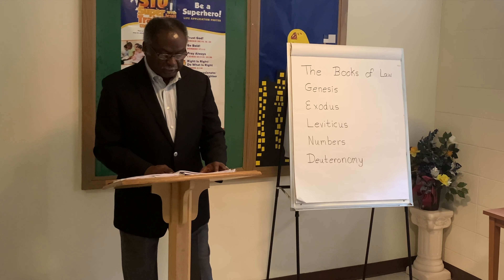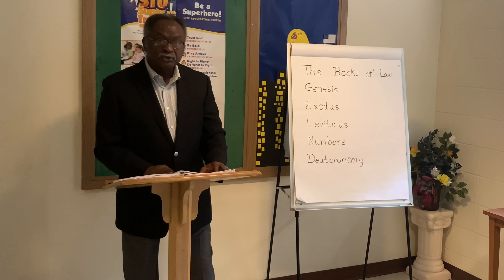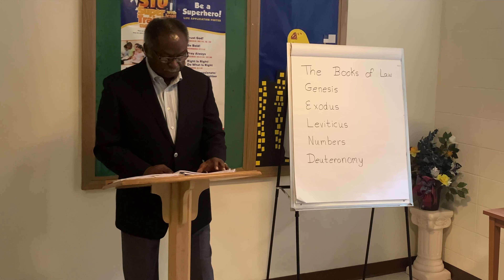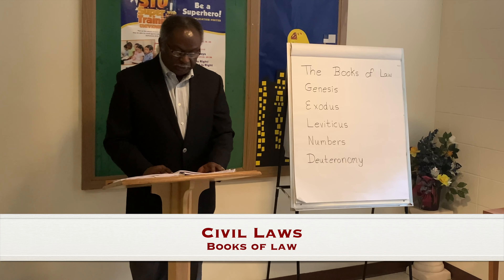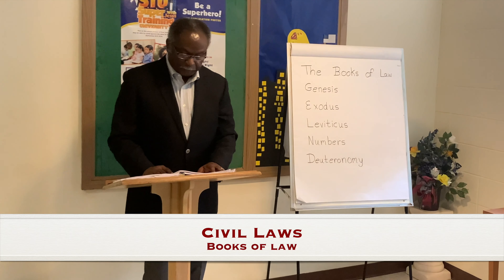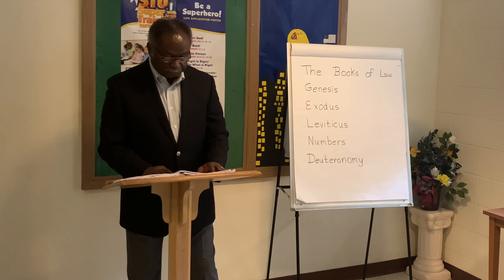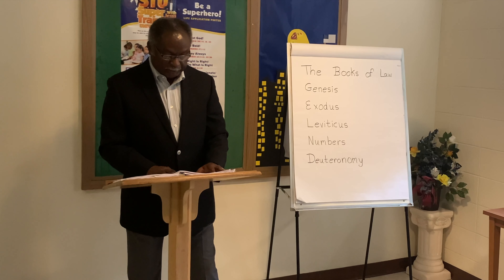Three of these books — Exodus, Leviticus, and Deuteronomy — lay out a series of civil, religious, and ethical laws by which the nation of Israel is to be governed. The civil laws were what we think of when we think of law. Some of their civil laws covered the same things as ours do, like murder and stealing, but some covered other things, like what to do if you accidentally killed your neighbor's donkey, and the punishments were different.